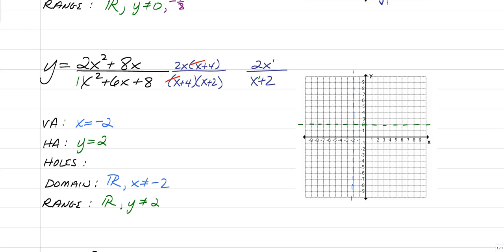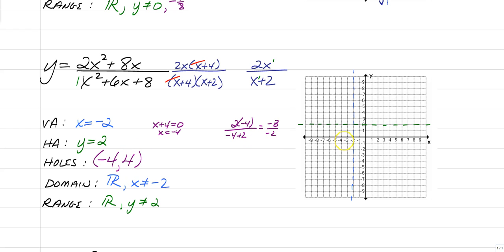Now our hole. What canceled was x plus 4. Set that equal to 0: x equals negative 4 — that is the x-coordinate of our hole. Substitute into the simplified equation: 2 times negative 4 over negative 4 plus 2 equals negative 8 over negative 2, so the y-coordinate is positive 4. Go to negative 4, positive 4 and place a hole. That means x is also not allowed to equal negative 4, and y is not allowed to equal positive 4. Then type it into your graphing calculator and give a nice sketch.